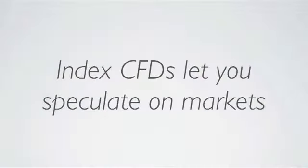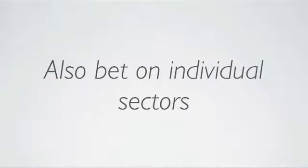Stock index CFDs enable you to speculate on the price movements of the stock market. With this type of CFD, however, you are trading a market segment of between 30 and 500 stocks, rather than just one share. Unlike some spread betting firms, issuers also provide CFDs on stock market sectors within international markets such as banks, telecoms and household goods.